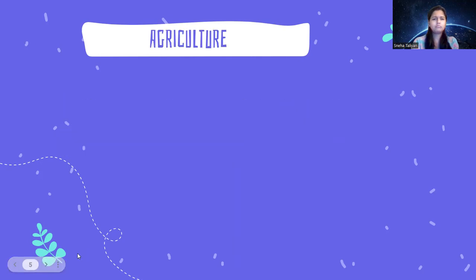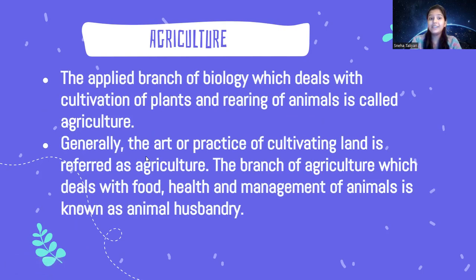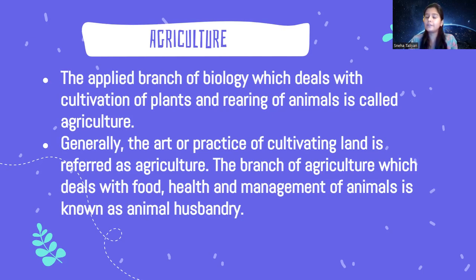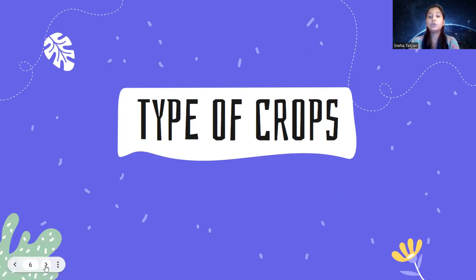What is agriculture? It is an applied branch of biology which deals with the cultivation of plants and rearing of animals. Generally the art and practice of cultivating land is referred to as agriculture. The branch of agriculture which deals with the food, health, and management of animals is a smaller branch called animal husbandry.